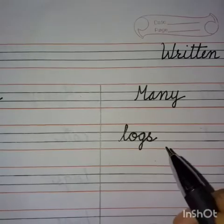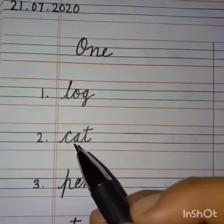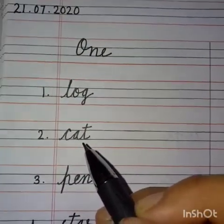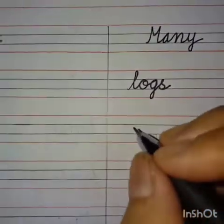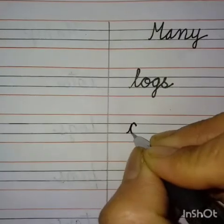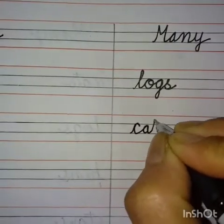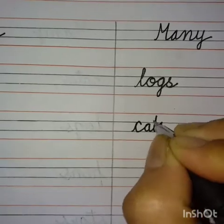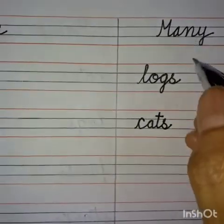Number two: C-A-T — Cat. One cat. For many: C-A-T-S — Many cats.